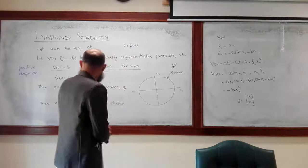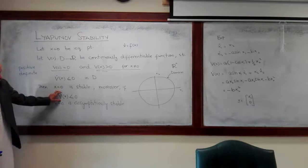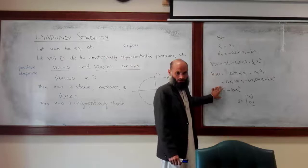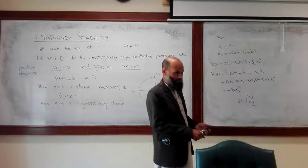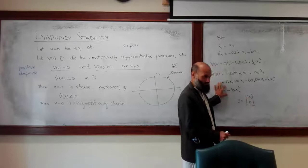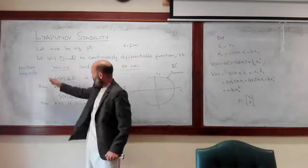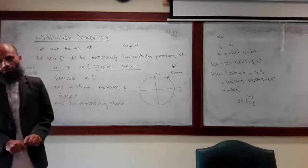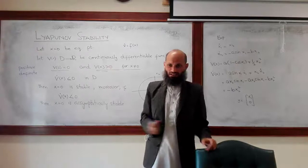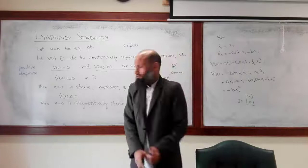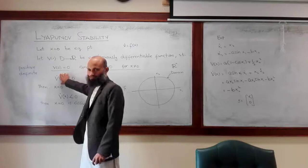What about asymptotic stability? Is this a negative definite function? This function is 0 for some non-zero x values, so it is negative semi-definite. The conclusion is that the equilibrium point x = 0 is stable. Remember that these conditions are only sufficient conditions and not necessary conditions. We can conclude from here that the equilibrium point is stable; however, we cannot conclude that it is not asymptotically stable.